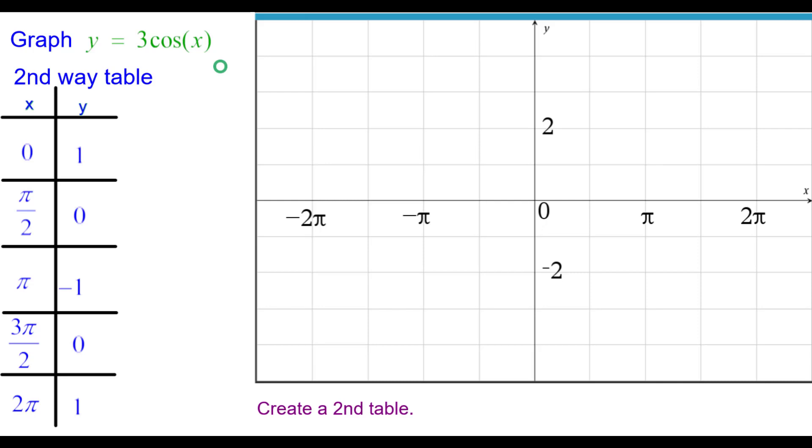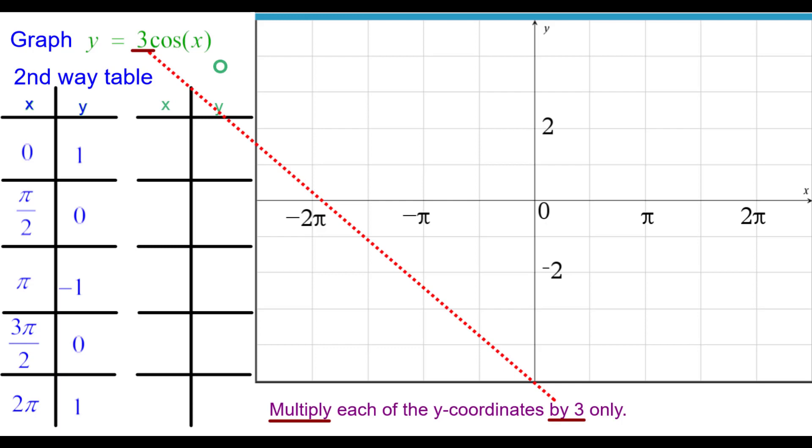And you should just know these values here. We need to create a second table. And we need to multiply each of the y-coordinates by 3 only. The reason I say that is nothing is happening to the x-coordinates with that parameter of 3. So we'll keep the x-coordinates the same.